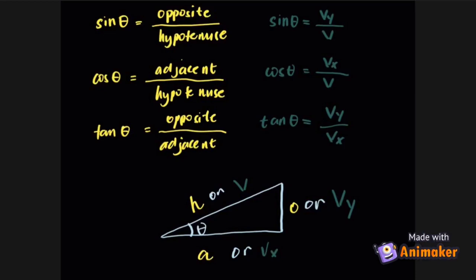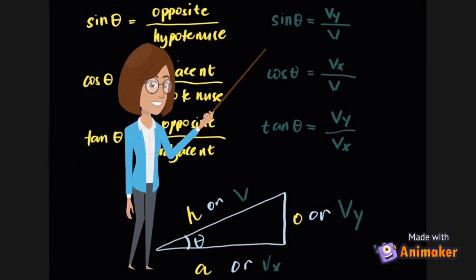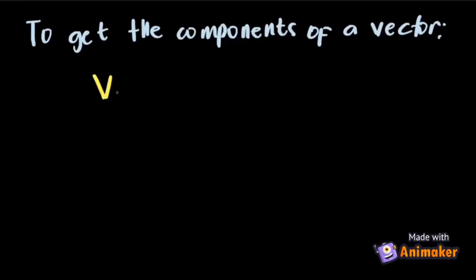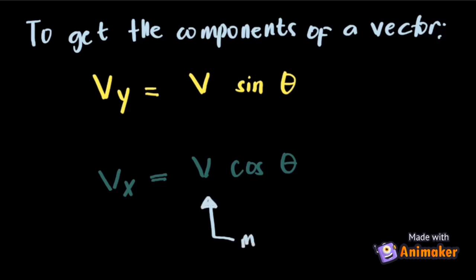And in finding the components of a vector using trigonometric functions, we use these formulas. Thus, the components of a vector are V_y is equal to V sin theta for Y component, and V_x is equal to V cos theta for X component, where V is the magnitude of the original vector and theta is the angle that the vector makes with positive X axis.